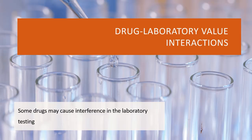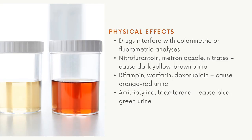Drug-laboratory value interactions involve some drugs causing interference in lab tests. For physical effects, drugs may interfere with colorimetric or fluorimetric analysis. For example, nitrofurantoin, metronidazole, or nitrates can cause dark yellow-brown colored urine, while rifampicin, warfarin, and doxorubicin might cause orange-red urine. You need to counsel patients using these drugs for the first time, alerting them to expect changes in urine color.